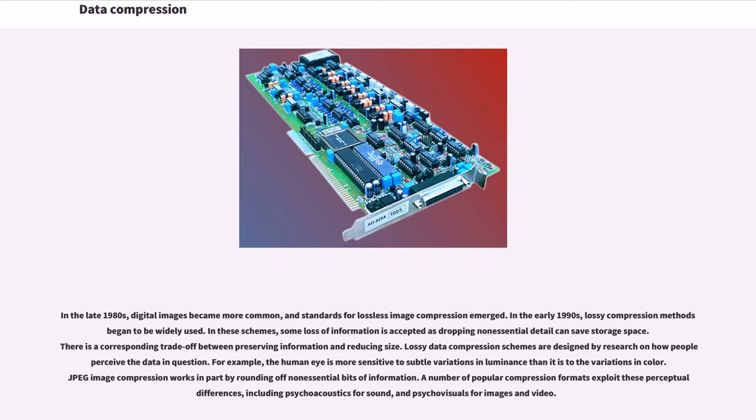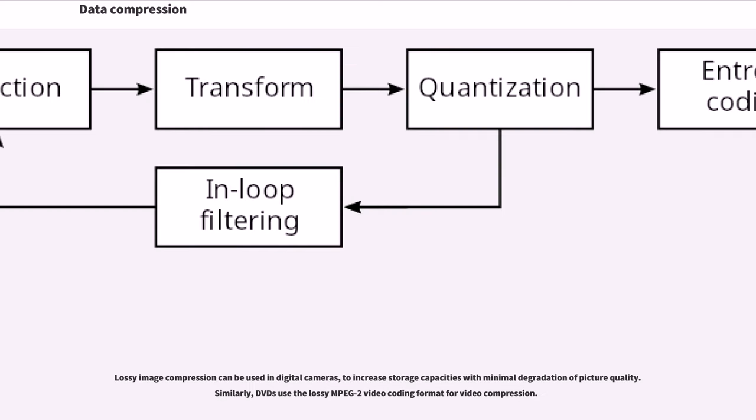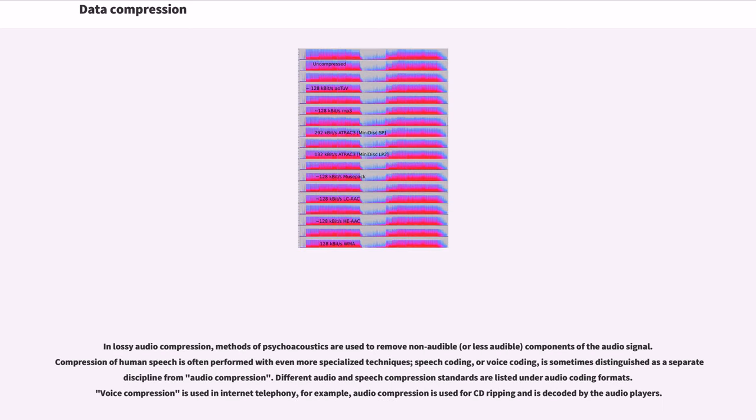A number of popular compression formats exploit these perceptual differences, including psychoacoustics for sound, and psychovisuals for images and video. Lossy image compression can be used in digital cameras to increase storage capacities with minimal degradation of picture quality. Similarly, DVDs use the Lossy MPEG-2 video coding format for video compression.